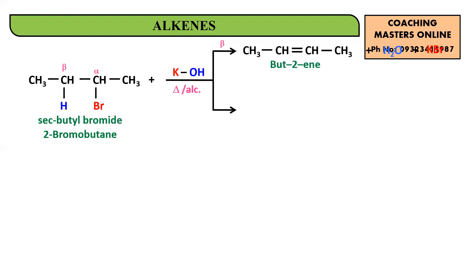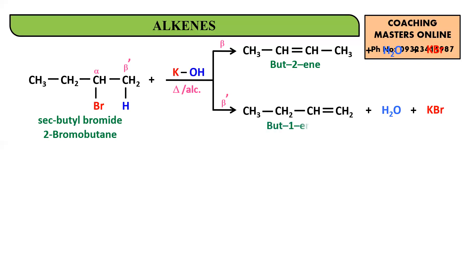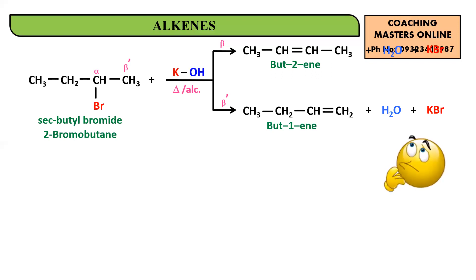If elimination of hydrogen occurs from the beta-dash carbon instead, H and OH again give water and K and Br give KBr, but this time you get but-1-ene. So the question is: which compound is the major product and which is the minor product?